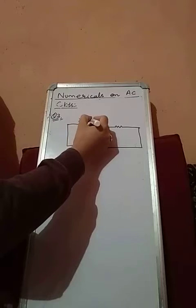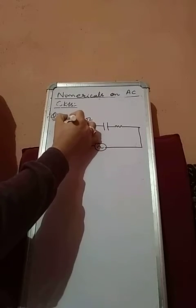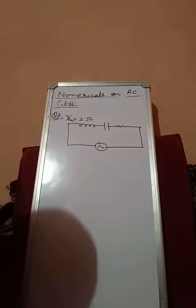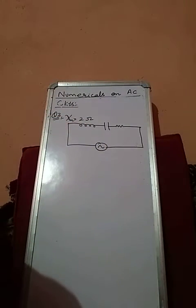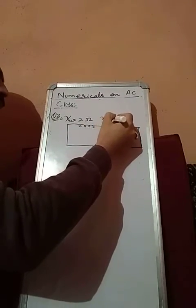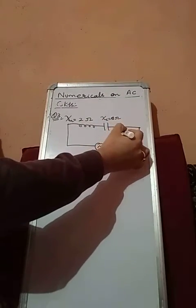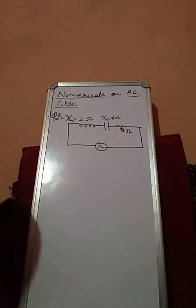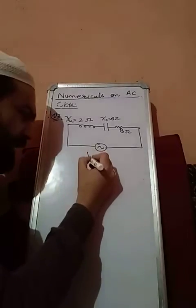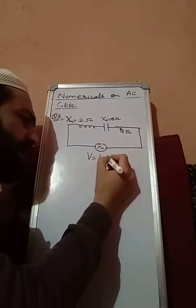This is 2 ohm. This is not L but this is chi L. If this is Henry then it is L. This is 8 ohm, this is chi C 8 ohm, and resistor is also 8 ohm. And voltage we apply, that is 10 cos 100 pi t.